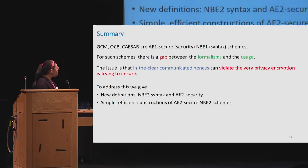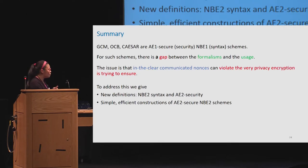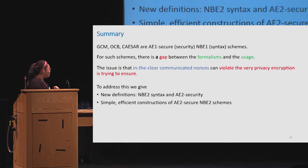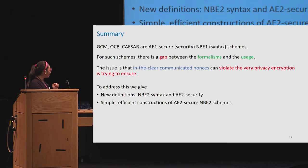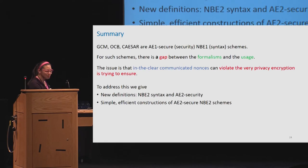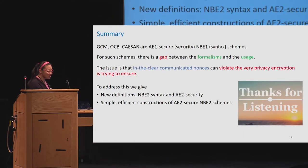To summarize: our work deals with AE1-secure NBE1 schemes like GCM, OCB, and the CAESAR candidates. We address a gap between formalisms and usage — communicating a nonce in the clear is not as fine as it may seem, as it violates privacy. To address this, we give a new definition of syntax and security and show that it's simple and efficient to construct AE2-secure NBE2 schemes. That's all, thank you everyone.